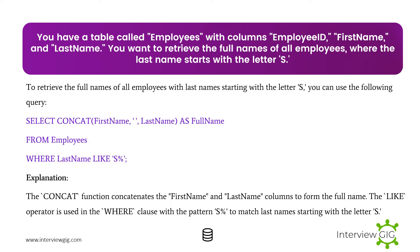Next Scenario: You have a table called Employees with columns Employee ID, First Name, and Last Name. You want to retrieve the full names of all employees where the last name starts with certain letters. To do this, you can use the following query. The CONCAT function concatenates the First Name and Last Name columns to form the full name. The LIKE operator is used in the WHERE clause with a percent pattern to match last names starting with those letters.